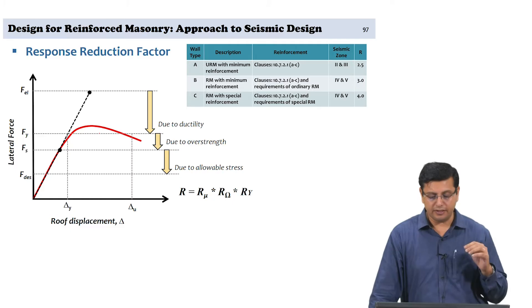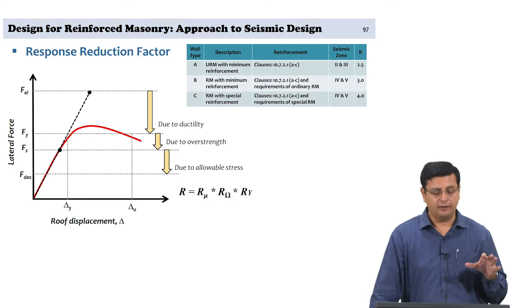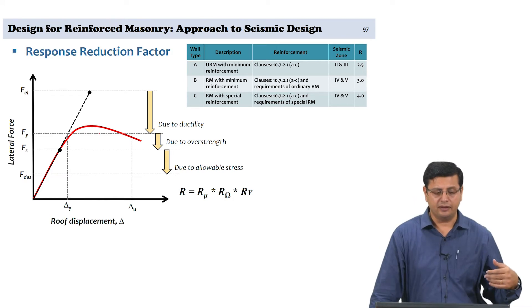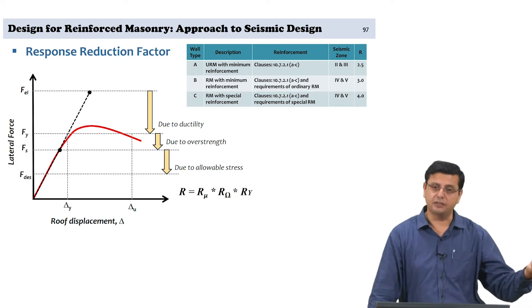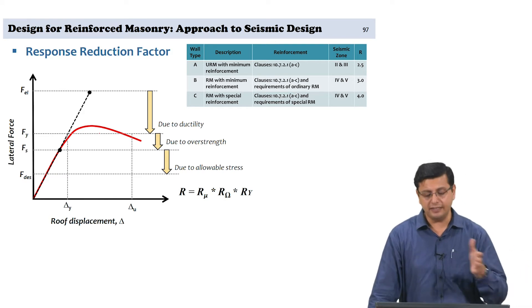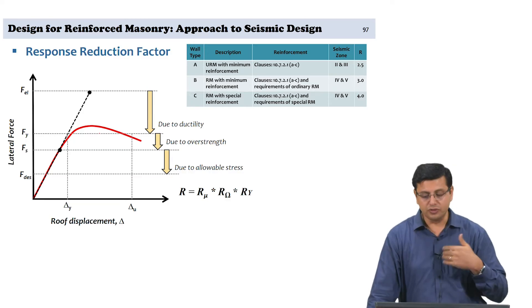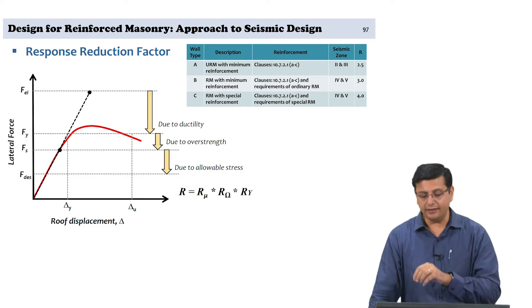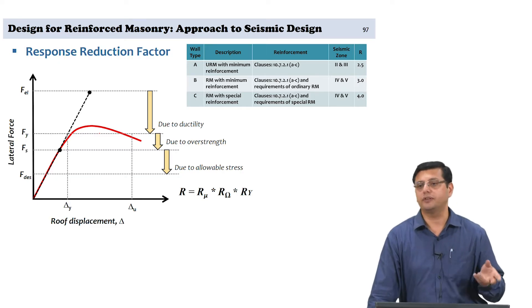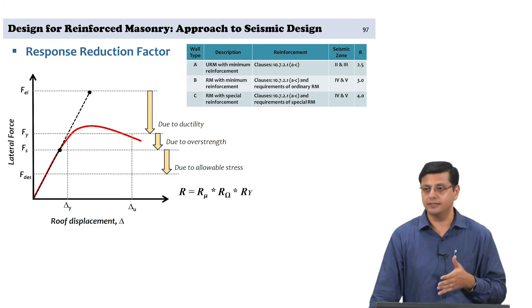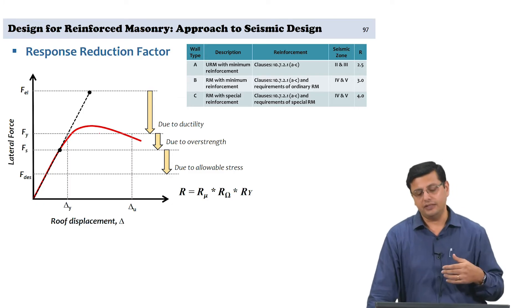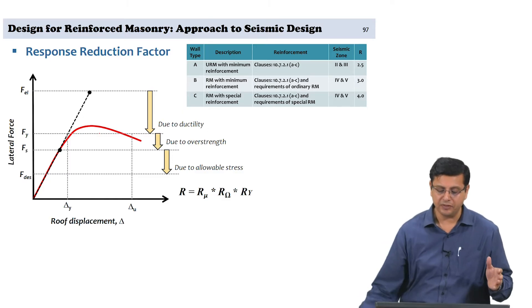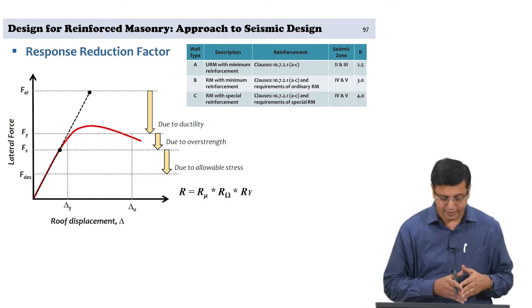The starting point, as far as seismic design is concerned, is the design configuration — the plan configuration that you have arrived at. We have to choose the type of system we want to design, which leads us to what sort of response reduction factor we can use, and we arrive at the horizontal seismic coefficient, which then determines the total base shear that the structure is going to be designed for.